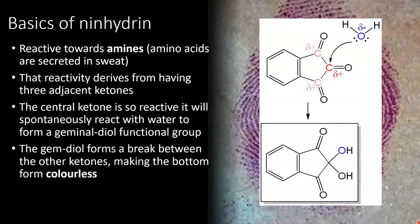The basics of ninhydrin is that it's reactive towards amines. These are nitrogen-containing functional groups, and they comprise about half the structure of amino acids, which are secreted in sweat and transferred whenever you touch an object. The reactivity of ninhydrin derives from it having three adjacent ketone groups. These ketone groups feature a carbon-to-oxygen bond. They are reactive because the oxygen atom is electronegative and steals electrons away from the carbon, making it slightly positively charged. This effect gets amplified when ketones are stacked next to one another, making the central ketone most electropositive, so reactive that it will spontaneously react with water if present.